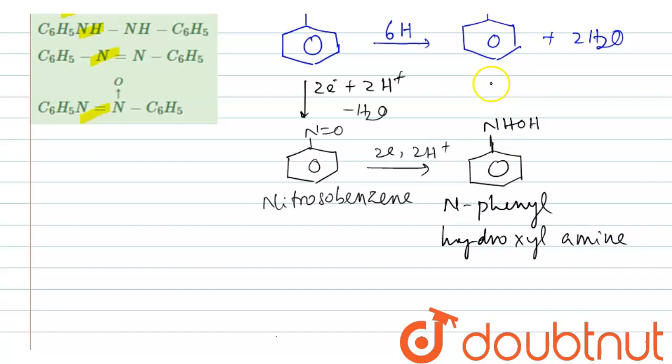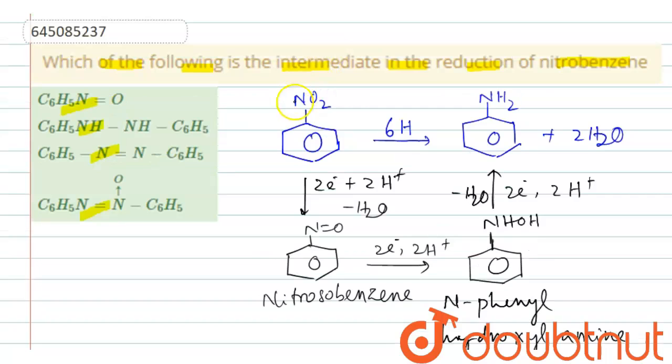Then this one gives this compound again by taking two electrons and two H plus ions. By releasing one mole of water it gives aniline. Therefore this change, nitrobenzene to aniline, takes place through these three steps.